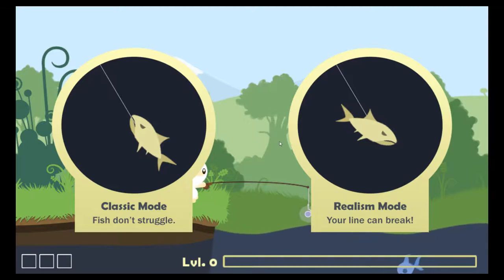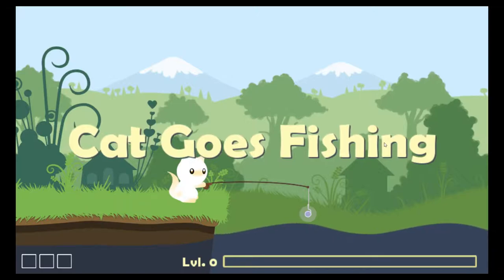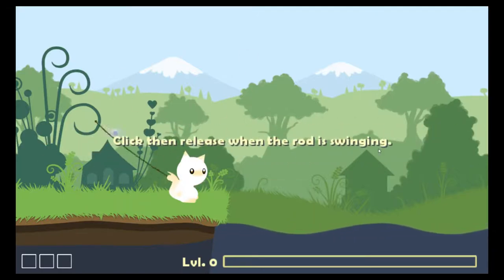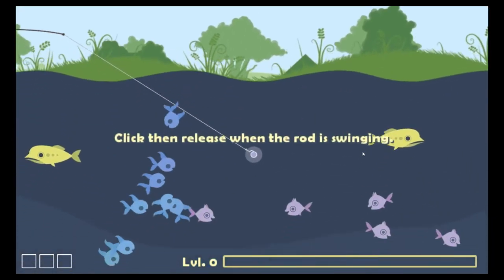I saw it off of KYR Speedy's channel. He was playing Classic Mode, and I started playing Classic Mode a couple days ago. I'm pretty far in it now, I got addicted, and so I thought it'd be fun to upload to the channel. It's pretty different from what I usually upload. But today we're going to be playing the Realism Mode, where your line can snap and everything, and we're going to see if we can do any good. So let's try to catch some fishies.